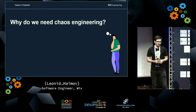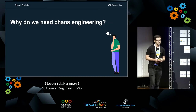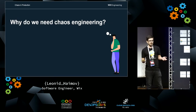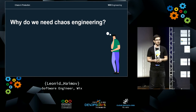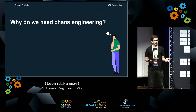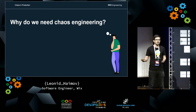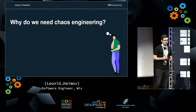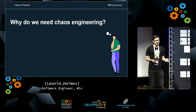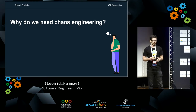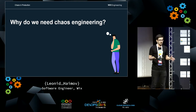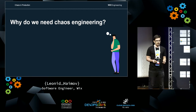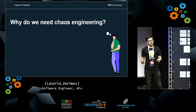So why do we need chaos engineering? We need it to identify weaknesses in the system through controlled experiments. Whenever we run a chaos experiment, we want to make sure that the system is still working as it should. If something bad happens during the experiment, we stop it and return everything as it was before.